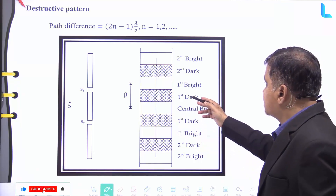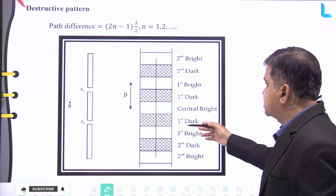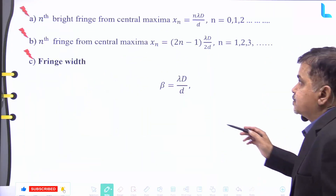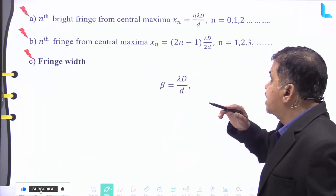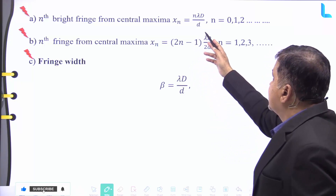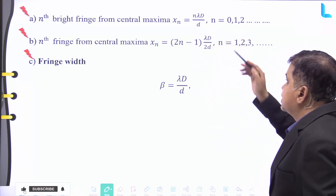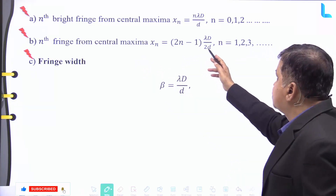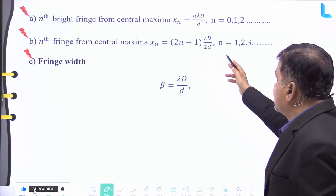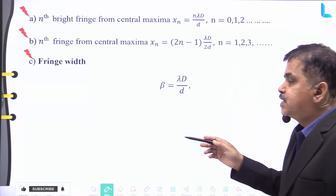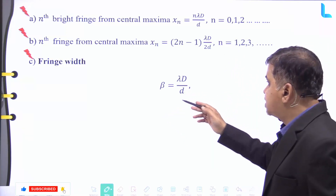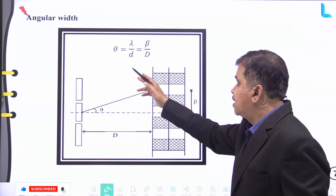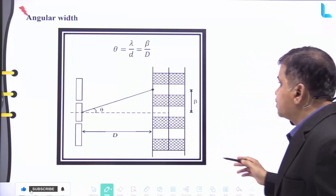The fringe width β can be seen with respect to the dark and bright fringes as shown in the figure. For the nth bright fringe from central maxima: x_n = nλD/d, where n = 0, 1, 2, and so on. For the nth dark fringe: x_n = (2n − 1)λD / (2d), where n = 1, 2, 3, and so on. The fringe width β = λD/d. The angular width θ = λ/d = β/D.